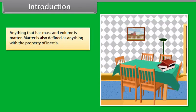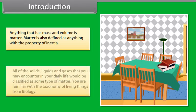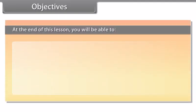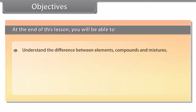Anything that has mass and volume is matter. Matter is also defined as anything with the property of inertia. All of the solids, liquids and gases that you may encounter in your daily life would be classified as some type of matter.